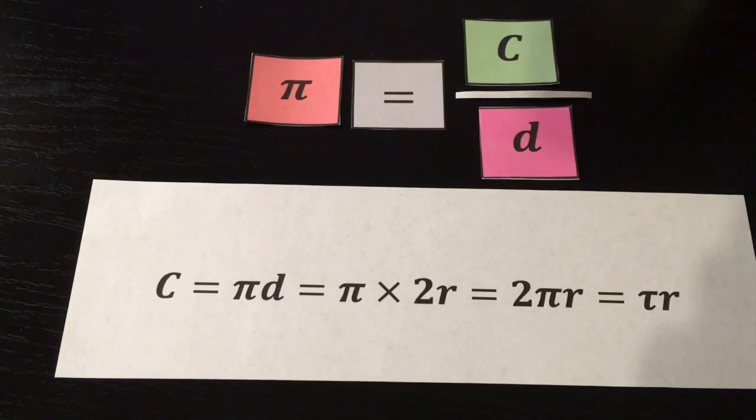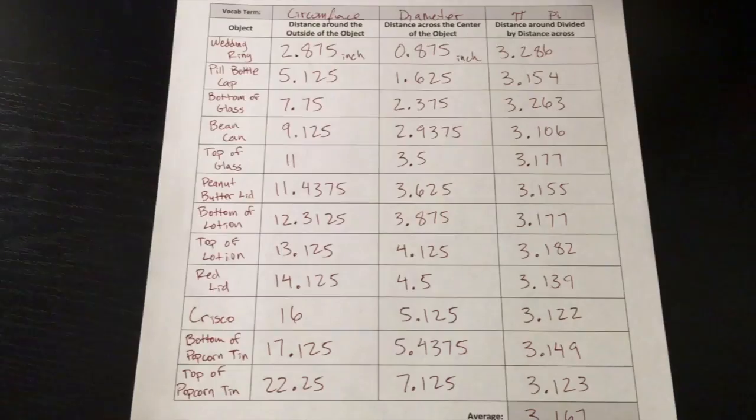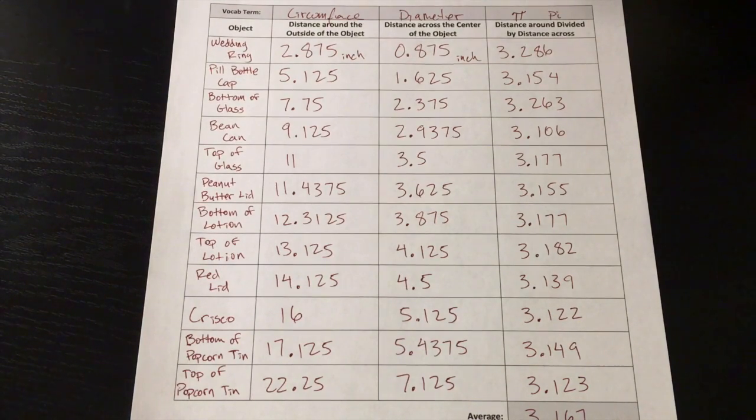So let's clarify what we've learned today. Pi is the ratio of the circumference divided by the diameter, and so then that means that the circumference is pi times the diameter, or 2πr, or just τr. In the next video, we're going to use these same measurements, but investigate area. See you then.